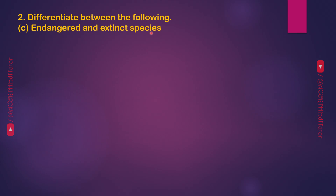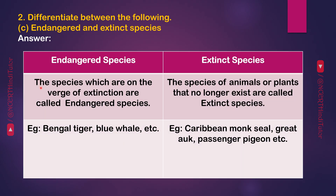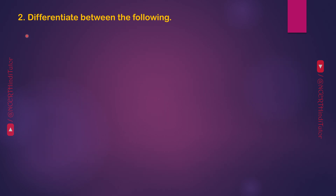Differentiate between Endangered and Extinct Species. Endangered Species: the species which are on the verge of extinction are called Endangered Species. Extinct Species: the species of animals or plants that no longer exist are called Extinct Species. Endangered Species Example: Bengal Tiger, Blue Whale etc. Extinct Species Example: Caribbean Monk Seal, Great Auk, Passenger Pigeon etc.